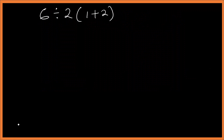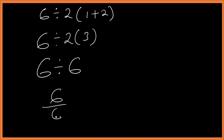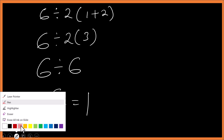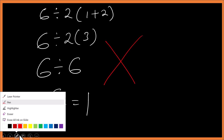What some people do is add first: 1 plus 2 is 3, then 6 divided by 2 is 3, giving 6 divided by 6, which equals 1. This approach is wrong.